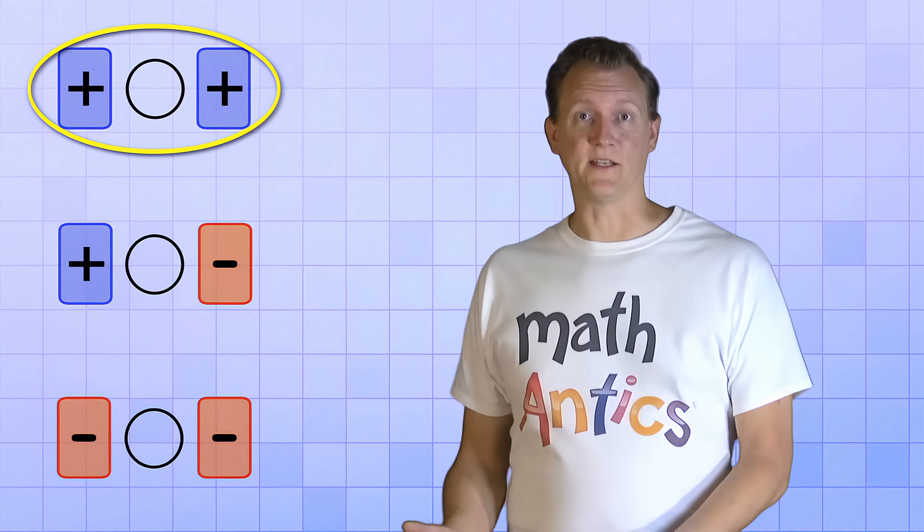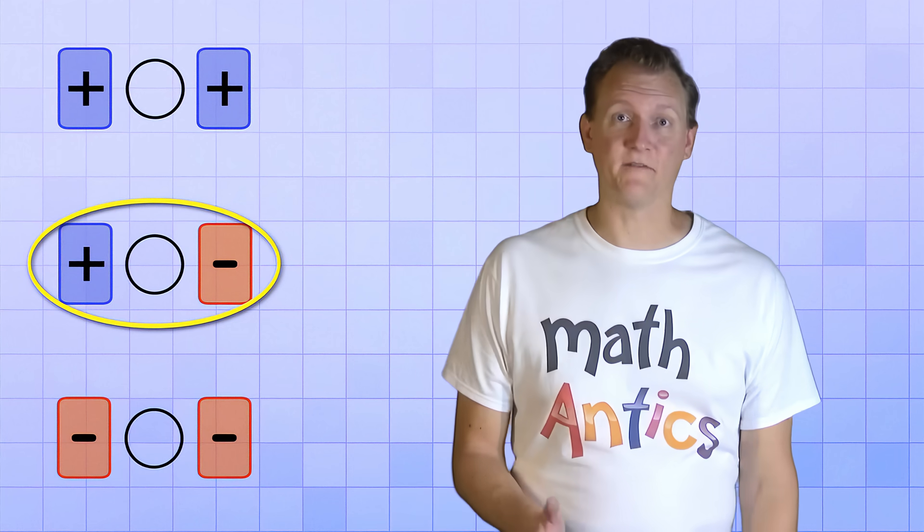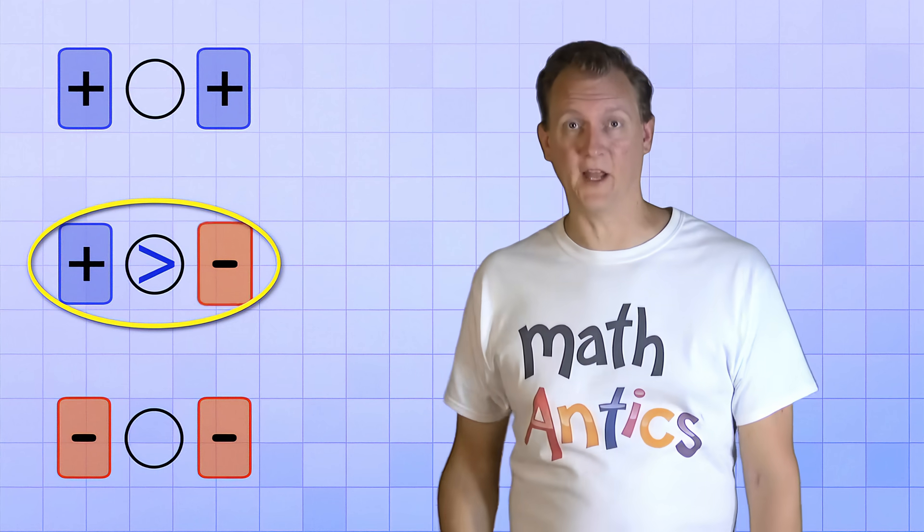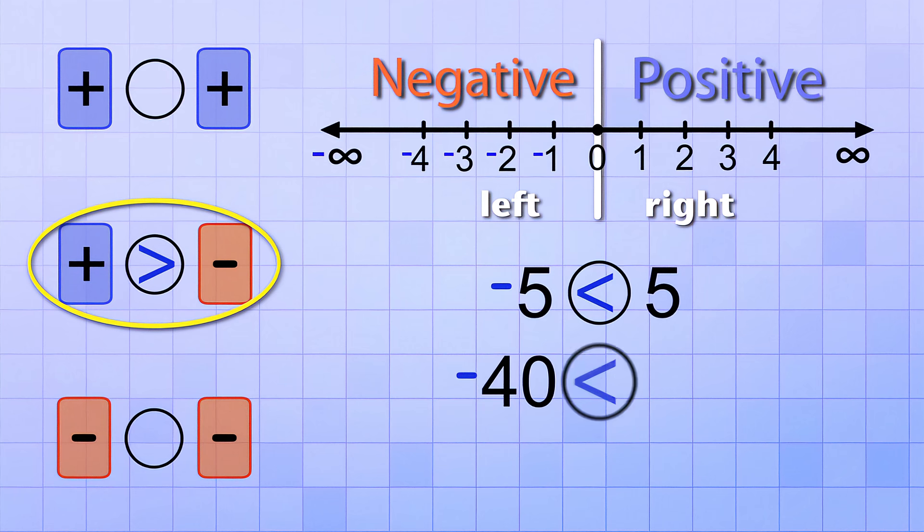It's also really easy to compare a positive integer and a negative integer, because a positive number is always bigger than a negative number. All of the positive numbers are on the right side of the number line, and all of the negative numbers are on the left. So negative 5 is less than 5, and negative 40 is less than 3, and negative 100 is less than 1.